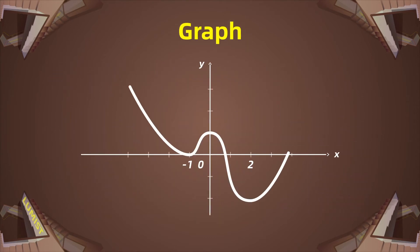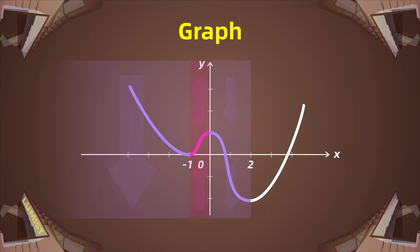Here is the graph of the function, and we can see that the monotonicity of this function matches our solution. As you may see, the function is decreasing between negative infinity and negative 1, increasing between negative 1 and 0, decreasing between 0 and 2, and increasing again from 2 to positive infinity.